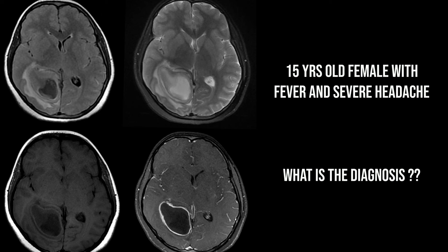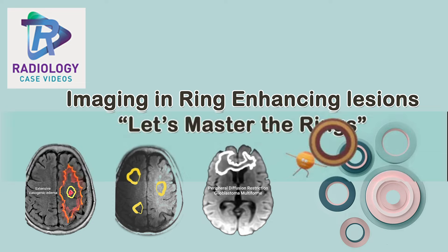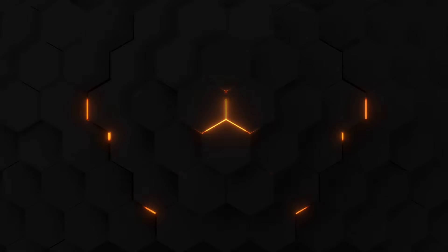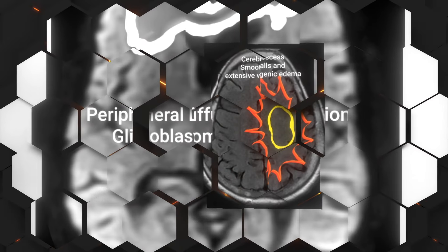A 15-year-old female presented with fever and severe headache. MRI was performed for evaluation of her headache. She also had a past history of valvular heart disease. Ring enhancing lesions are a common challenge in neuroimaging, and we would like to give you some tips which can help you in routine practice diagnosing ring enhancing lesions correctly.